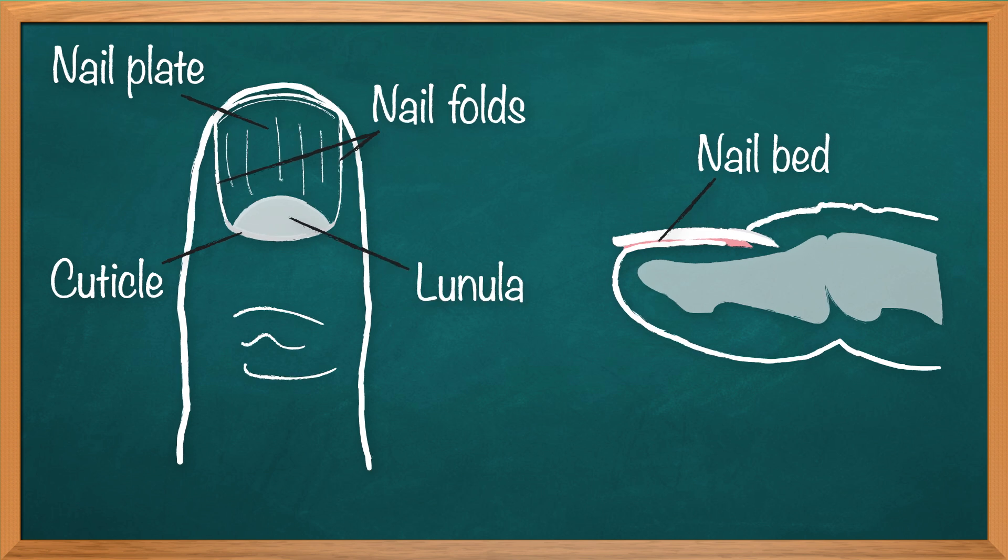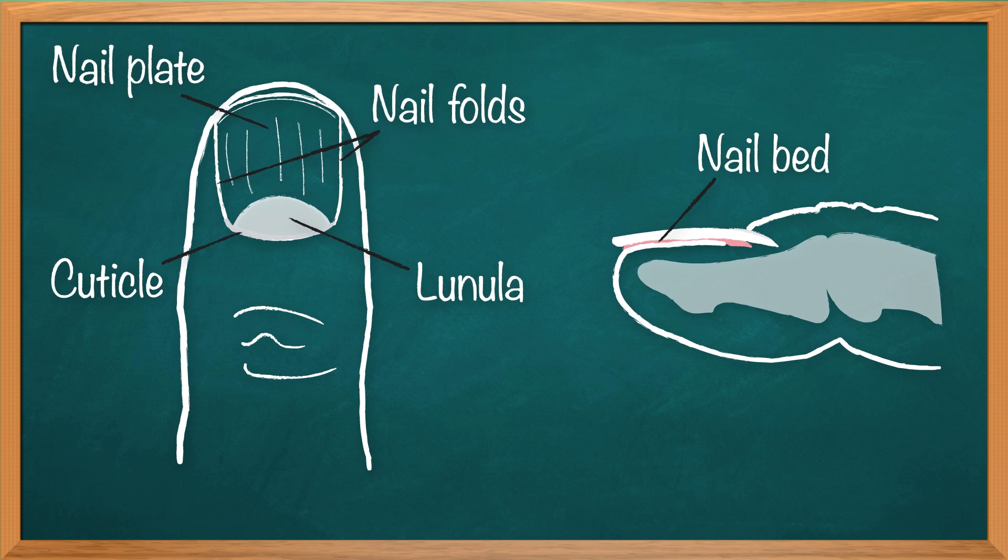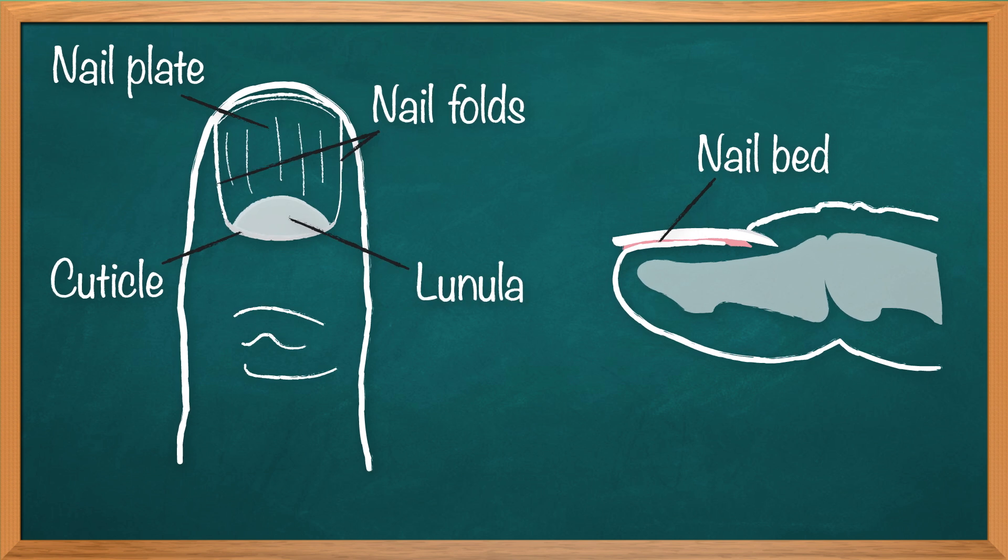Then of course, there's that little cool crescent shaped part. That's called the lunula. It's the visible part of the nail bed. So you put all that together, my friend, you have your fingernails.